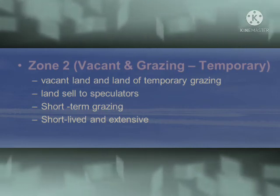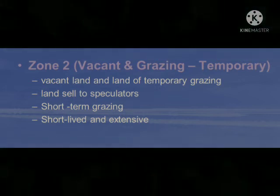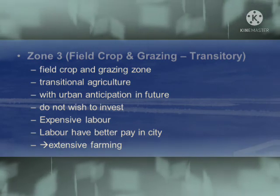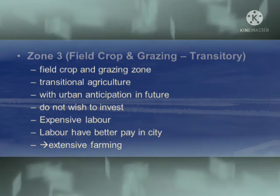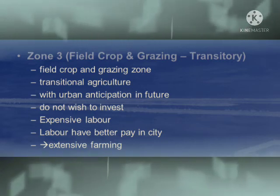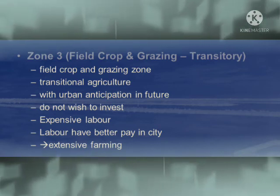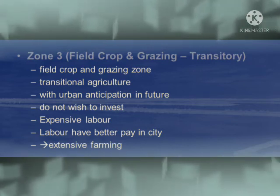Zone three is field crop and grazing. This zone represents transitional agriculture. With urban expansion anticipated in the future, farmers do not wish to invest in expensive labor, since labor receives better pay in the city. This zone is therefore dominated by extensive farming.